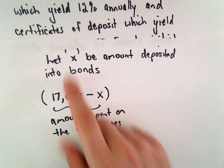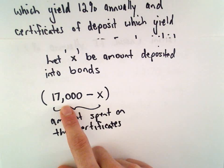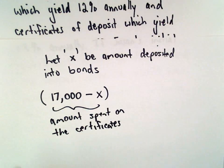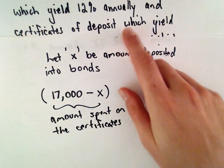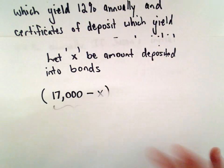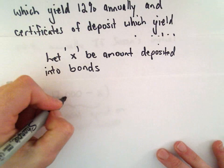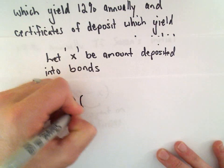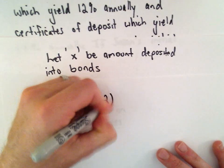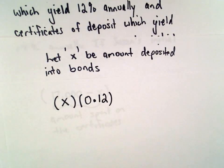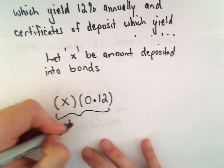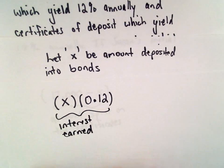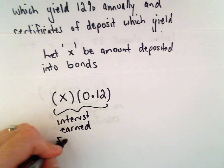So she spent X dollars on bonds and the remaining $17,000 minus X dollars on certificates. We know that for the bonds she earned 12%, so we would take the amount that she spent on bonds, which is X dollars, and if we multiply that by 0.12, that will give us the interest earned from the bonds.